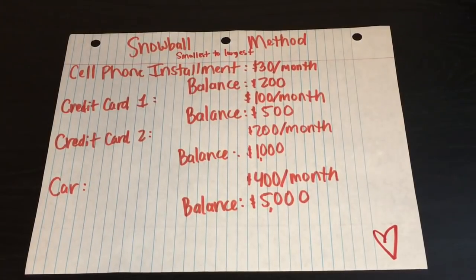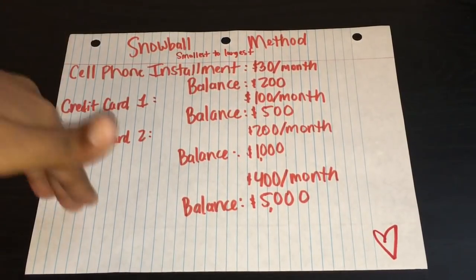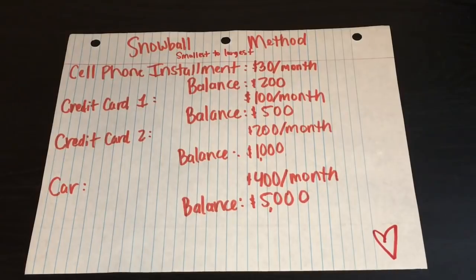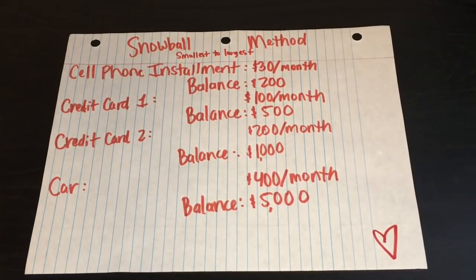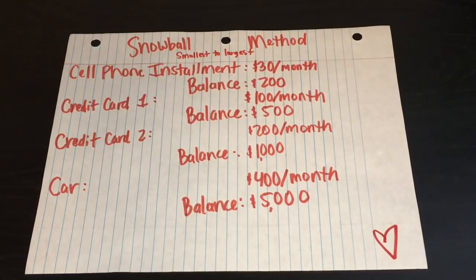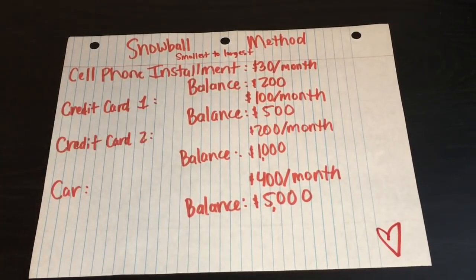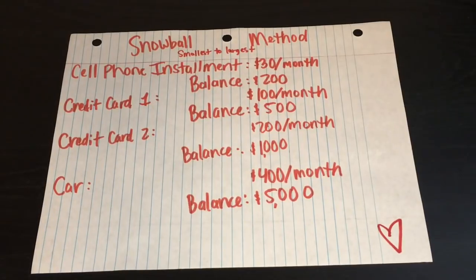I have a cell phone installment, I have credit card one, I have credit card two, and I have a car. If you have a house, that would go in here. Obviously the balance is typically a little bit higher on mortgages, so that would go at the bottom, but you just list them from smallest to largest, no matter how it's cut.